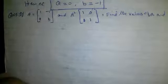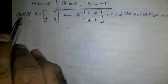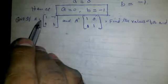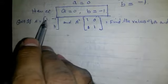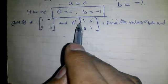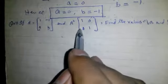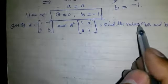Bismillahirrahmanirrahim, today we are going to solve question number 9 from exercise number 3.1. The question is: if A is equal to matrix 1, -1, a, b, and A squared is given as 1, 0, 0, 1, find the values of a and b.